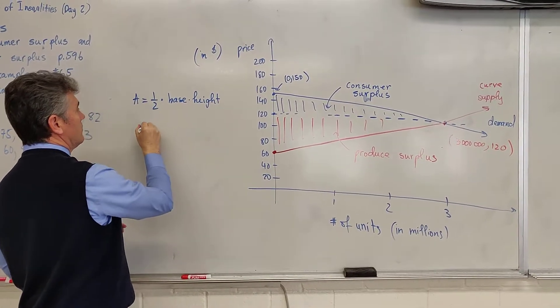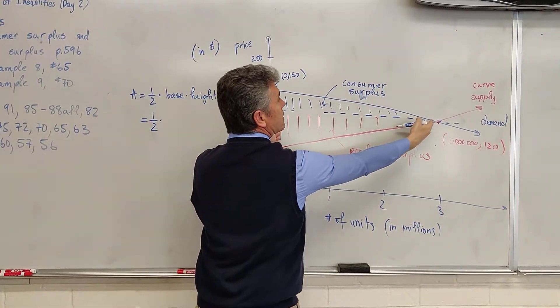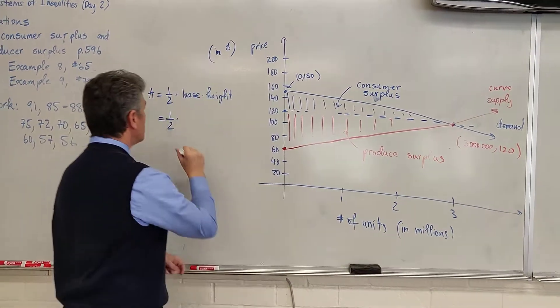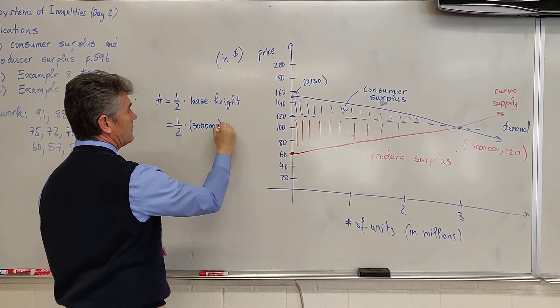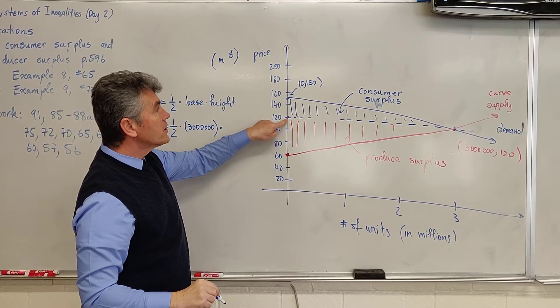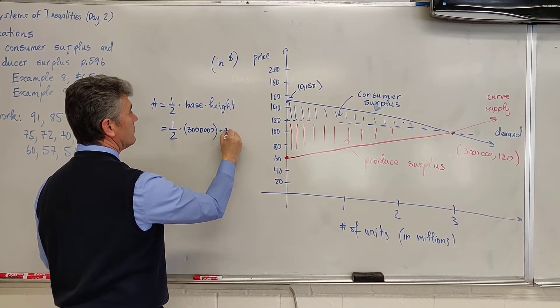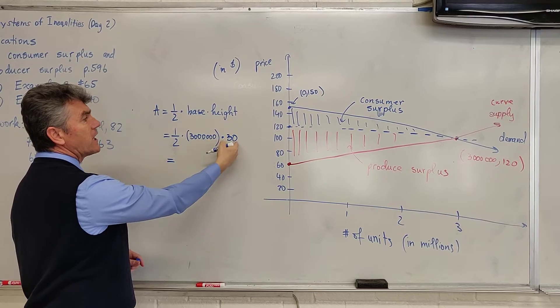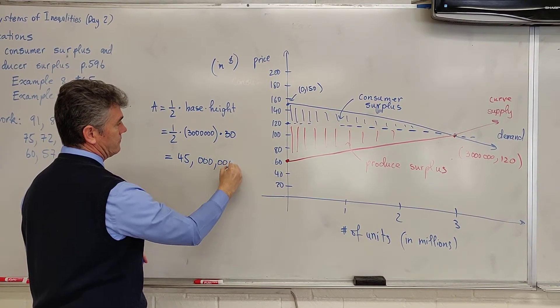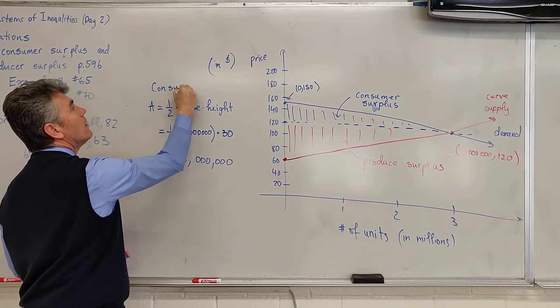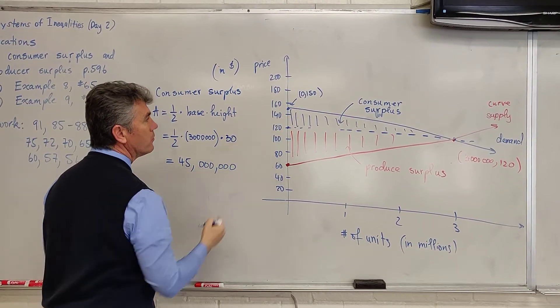The consumer surplus area of the triangle equals one-half times base times height. It equals one-half times 3 million times 30. This is 90 million, half of 90 million is 45 million. This is the consumer surplus, the area of the blue triangle.